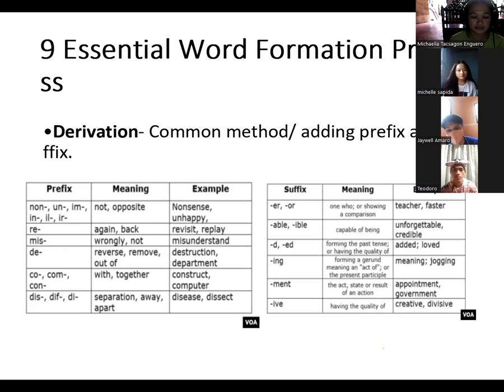The first one is derivation. Derivation is the most common method. It is adding prefix and suffix. And to refresh our mind, prefix and suffix is a group of letters that we added that appears at the beginning and endings of the words. There's a table here. The first column is the common prefix and suffix. For example, of common prefix: non, un, in, il. When we add the prefix non to our root word sense, it became nonsense.